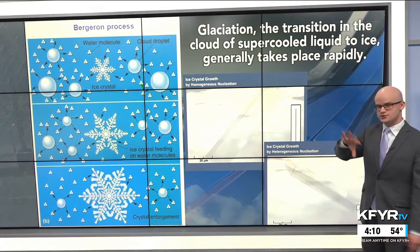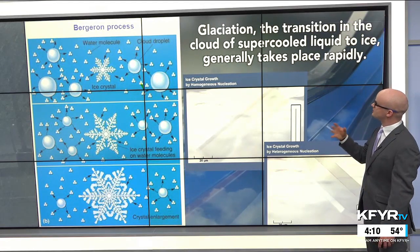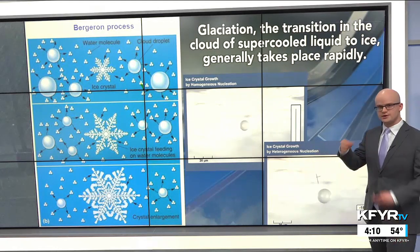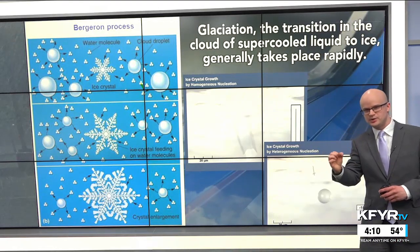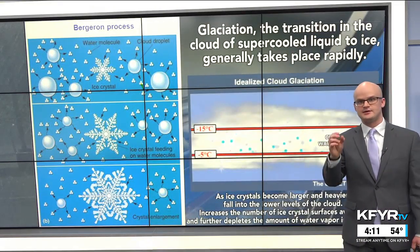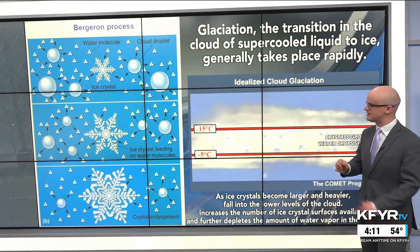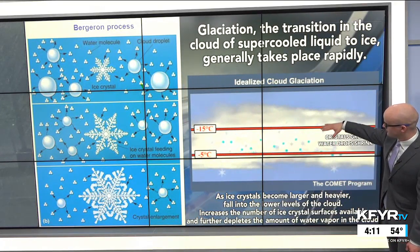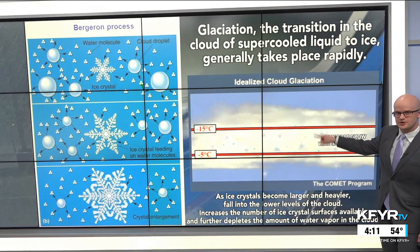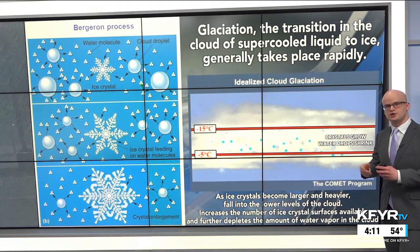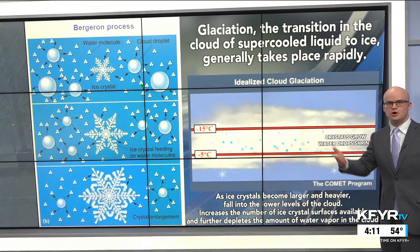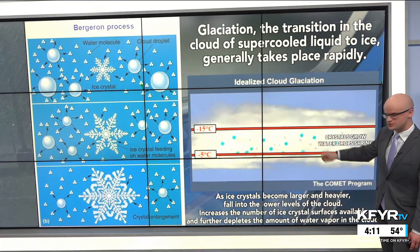Glaciation is the transition in the cloud of those supercooled droplets to ice, and it generally takes place pretty rapidly. Sometimes it just takes a little nick or some sort of nuclei — a droplet, a speck of dust, or just the right temperature — for that to turn into ice with that ice crystal and then grow. The crystals, as they're falling through the cloud, are growing as the water droplets are shrinking, especially in the specific layer of the clouds with the right temperature and humidity values, where we can have rapid snowfall or specific types of snowflakes form.